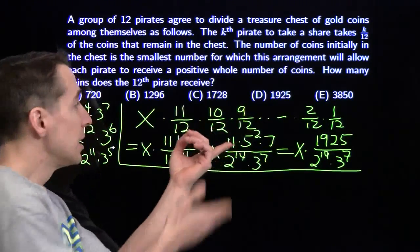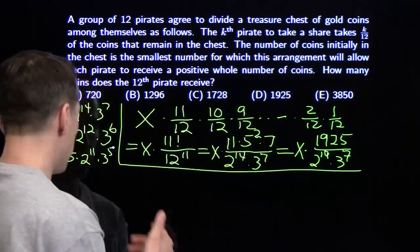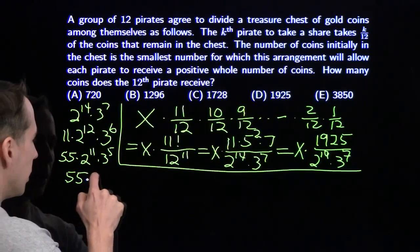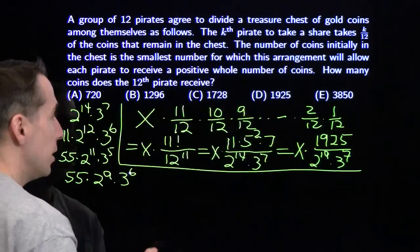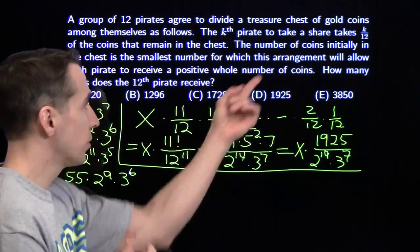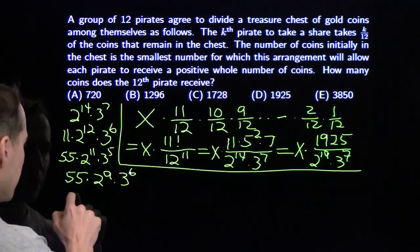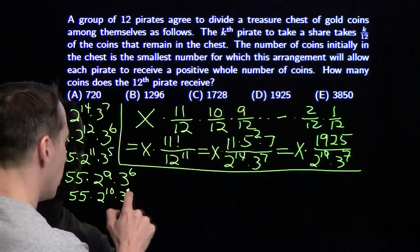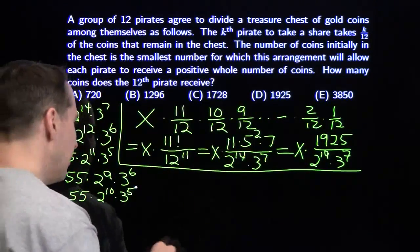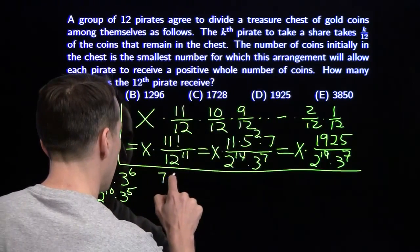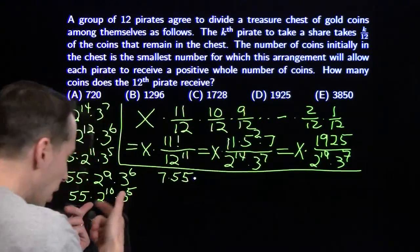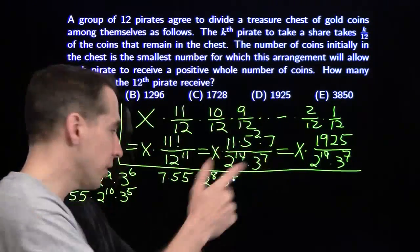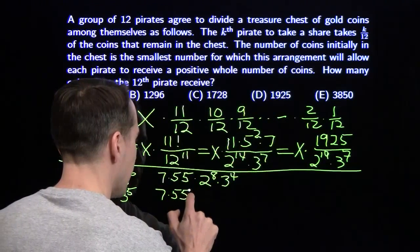The third pirate takes 3/12 (one quarter), leaving 3 quarters — throwing in another factor of 3 but removing 2 factors of 2. The fourth pirate takes 4/12 (one third), leaving 2 thirds — removing a factor of 3 and adding a factor of 2. The fifth pirate takes 5/12, leaving 7/12, giving 7 times 55, removing 2 factors of 2 and a factor of 3. The sixth pirate takes half, leaves half — simply removing another factor of 2.